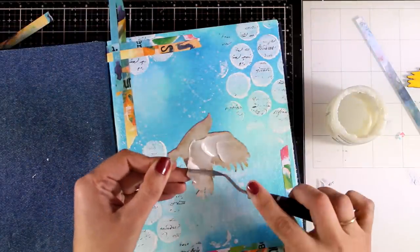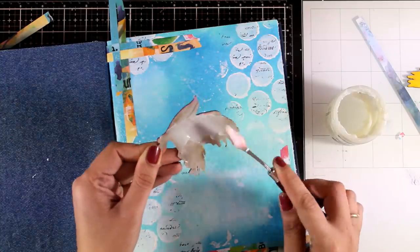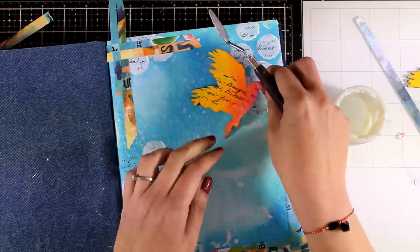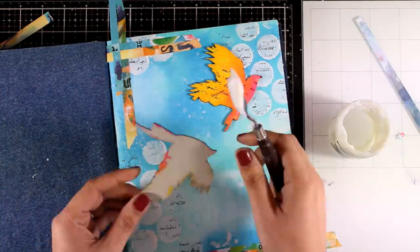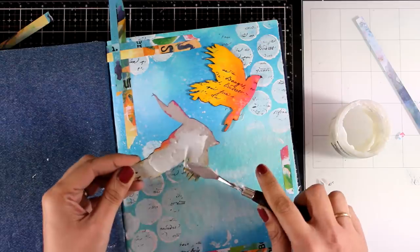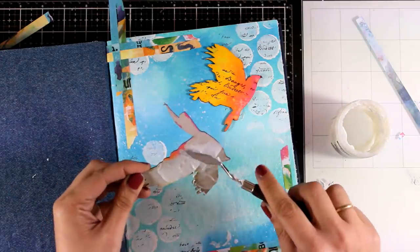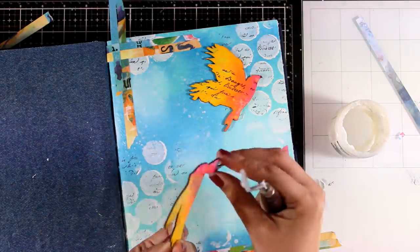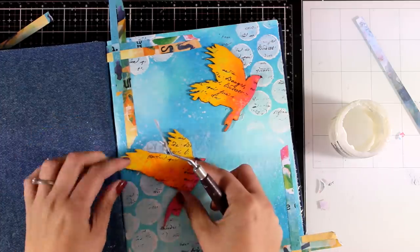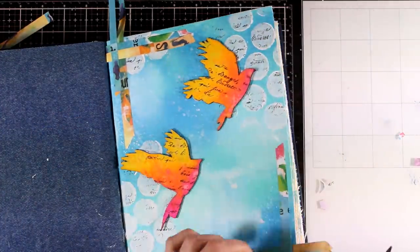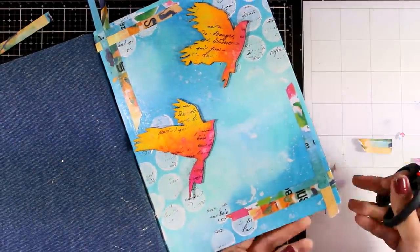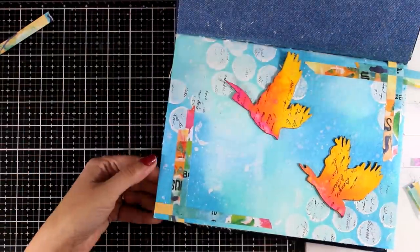And after sticking all those little strips of paper and color on my page, I'm going to stick down the birds. Now, for the birds, I'm using a generous amount of matte medium at the back to make sure that they are going to be nicely stuck there and they are not going to fall on me. I absolutely love the vibrant colors on those birds. Then, I'm going to use my scissors to chop off anything that sticks out of the page.